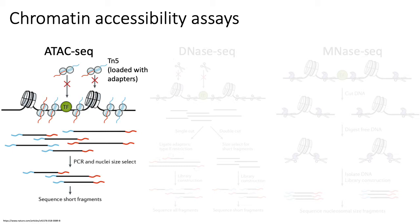There are a number of chromatin accessibility assays currently used in the scientific literature. Here we'll go over three major ones. The first is called ATAC-seq, which stands for Assay for Transposase-Accessible Chromatin using Sequencing. The key idea of ATAC-seq is that it uses a hyperactive transposase represented by the domain TN5, which is preloaded with Illumina sequencing adapters.